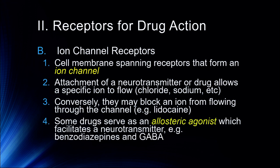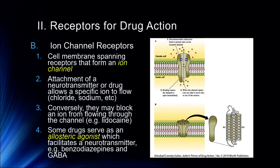Some drugs serve as an allosteric agonist, facilitating a neurotransmitter on that ionotropic receptor. For example, benzodiazepines are an allosteric agonist of the GABA receptor, increasing the flow of chloride ions into a cell, decreasing the probability of an action potential by hyperpolarizing the cell, and thereby quieting neurotransmission. That's one reason these drugs are considered anxiolytic — they reduce anxiety — but they also have side effects like reducing memory and potentially reducing respiration.